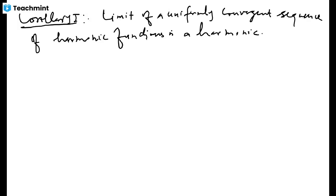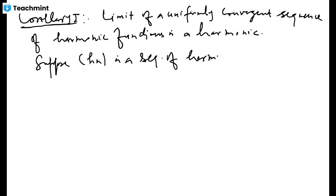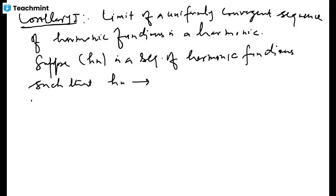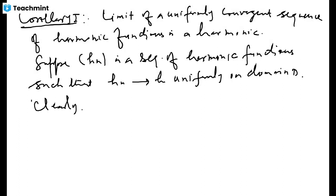Now let's work out the proof of Corollary 1. Suppose we have a sequence of harmonic functions {hₙ} such that hₙ converges to another function h uniformly on domain D. We know that the uniform limit of continuous functions is continuous, and since harmonic functions are continuous, h is also continuous.